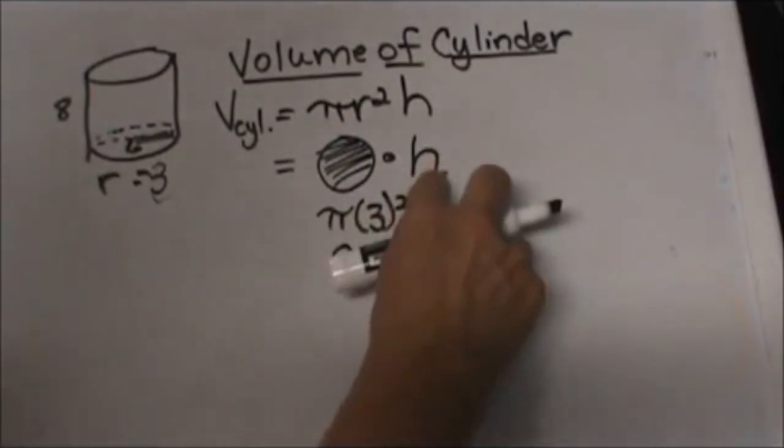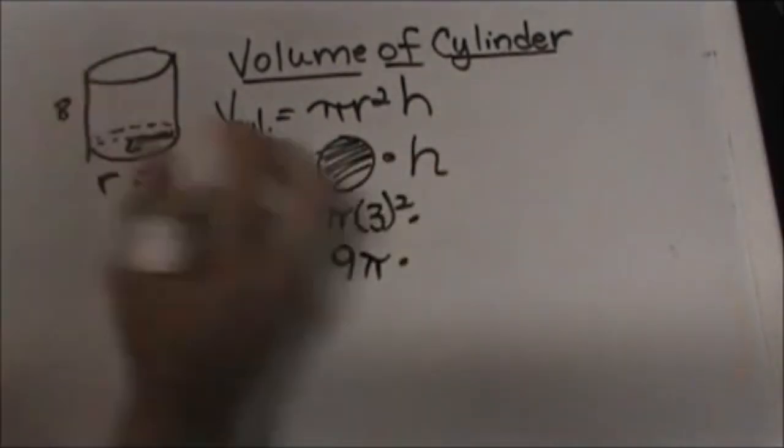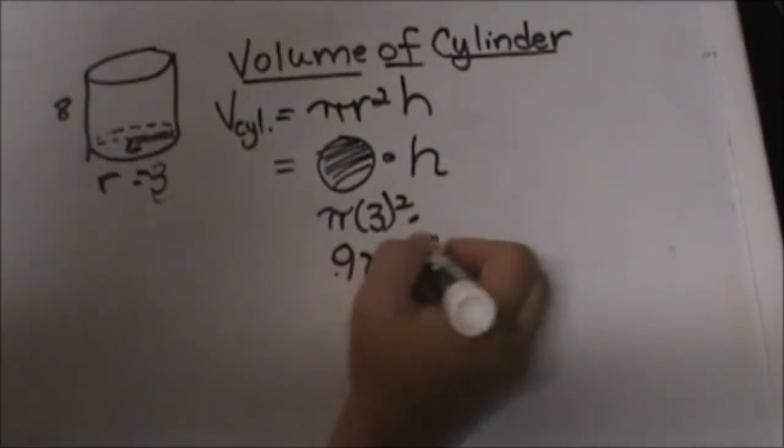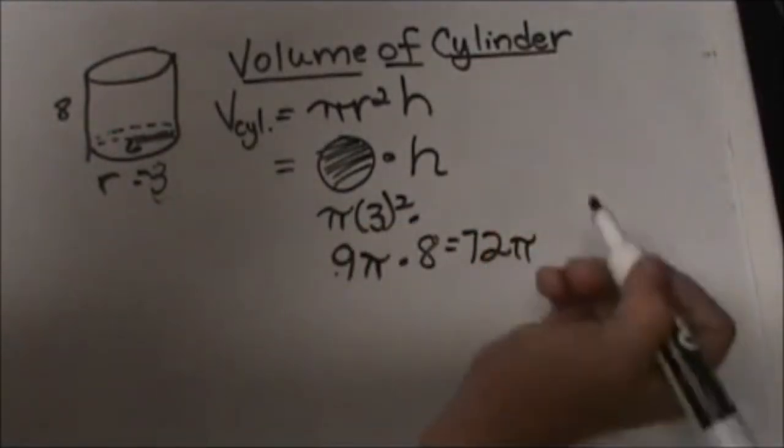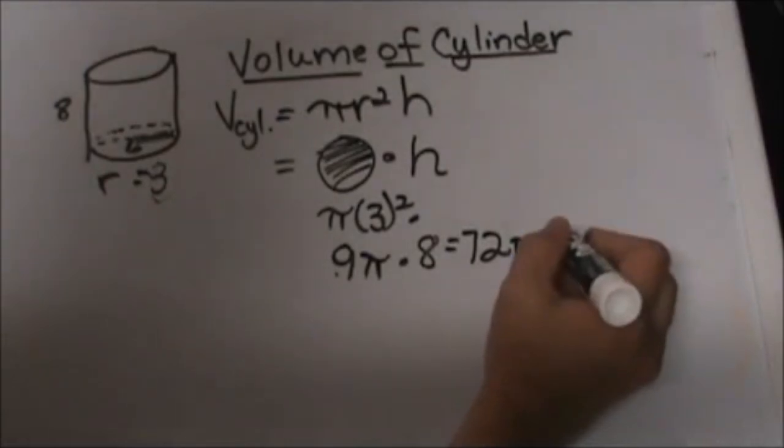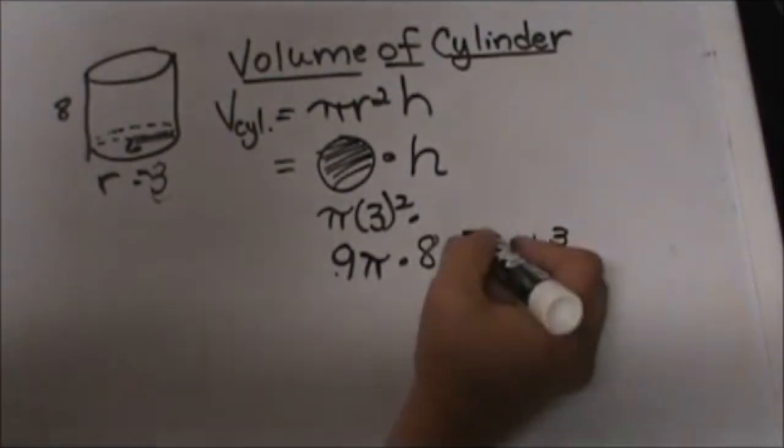Now I just need to multiply it times the height, and the height is 8, so 9 times 8 is 72. And then we just stick a pi next to it, so that would be my volume. And volume is always in units cubed because it's three dimensions.